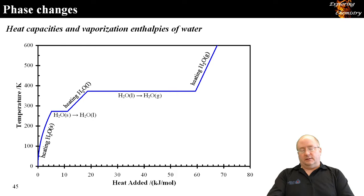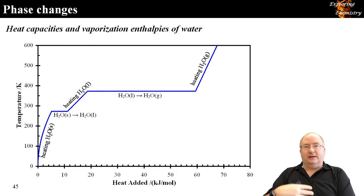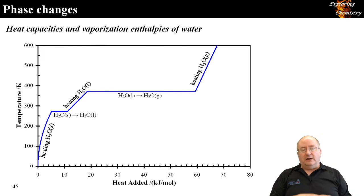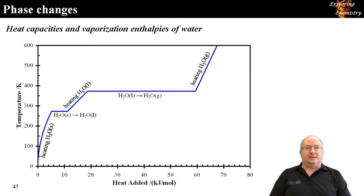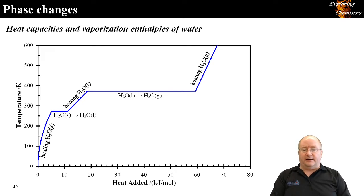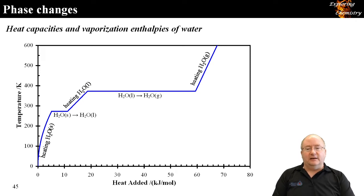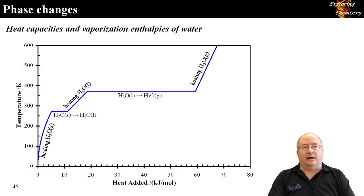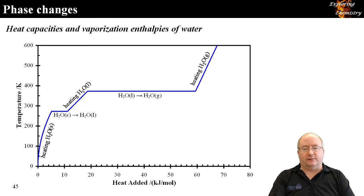We covered enthalpy and thermochemistry in Chem 100, so this is a reminder. This figure shows what happens to water as energy is added. At zero kelvin there is zero energy in the substance — one of the laws of thermodynamics. As heat is added, the temperature of the solid ice increases until we reach 273 kelvin — the melting point — where the phase transition from solid to liquid occurs at constant temperature, 273.15 K.